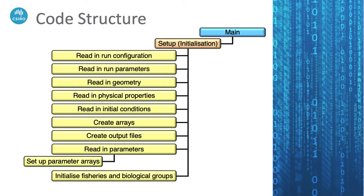The initialization basically sets up the run configuration from your CSV and run parameter file, then reads in the geometry and physics to help set up the information needed to create the initial conditions arrays. It then reads the initial conditions NetCDF file to fill in those starting variables. From there it creates arrays to store the output but also the species and fisheries parameters, reads in those parameters while also creating the output file. The structure of the output files is based on the Atlantis data structure and information stored in the initial conditions file. After all of that, you can finally initialize the model and be ready to start.